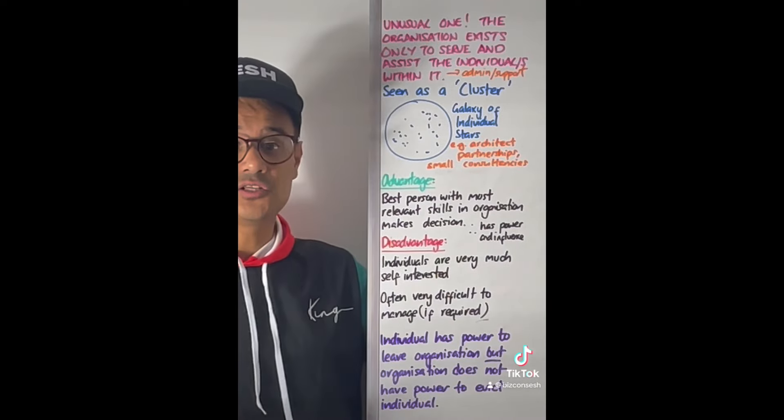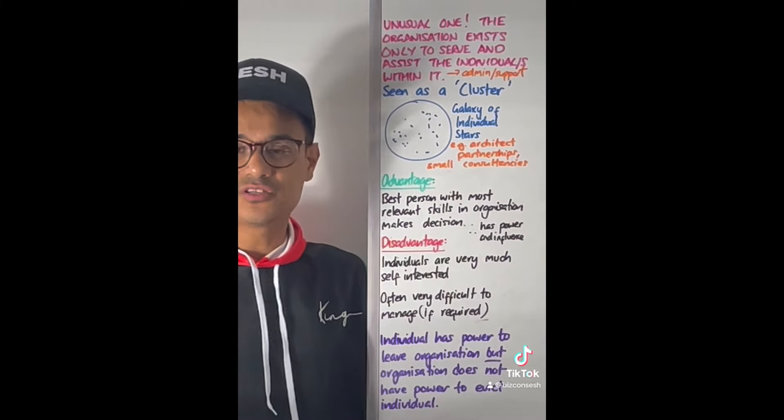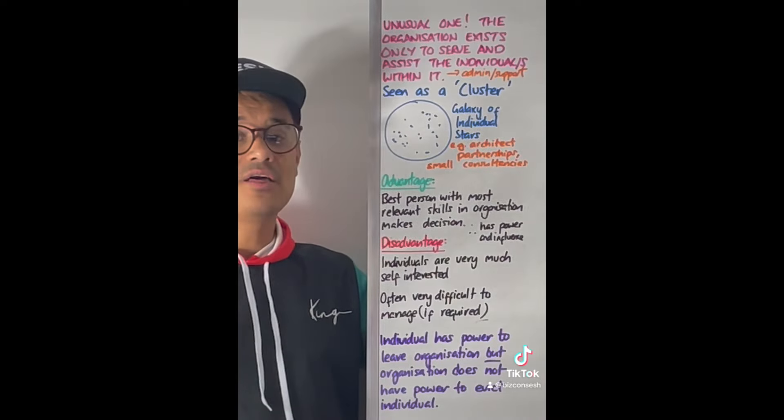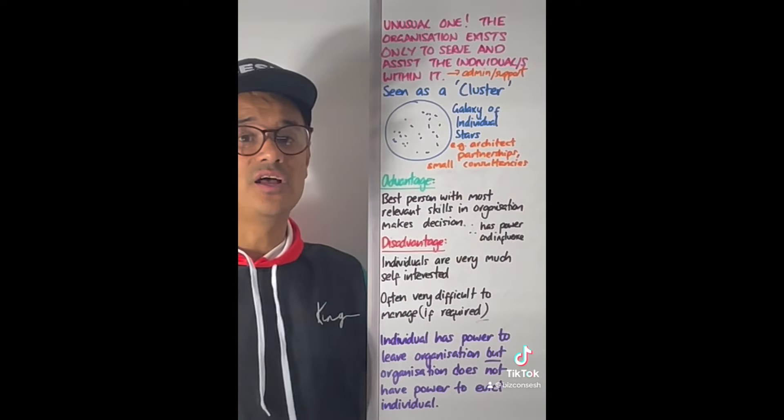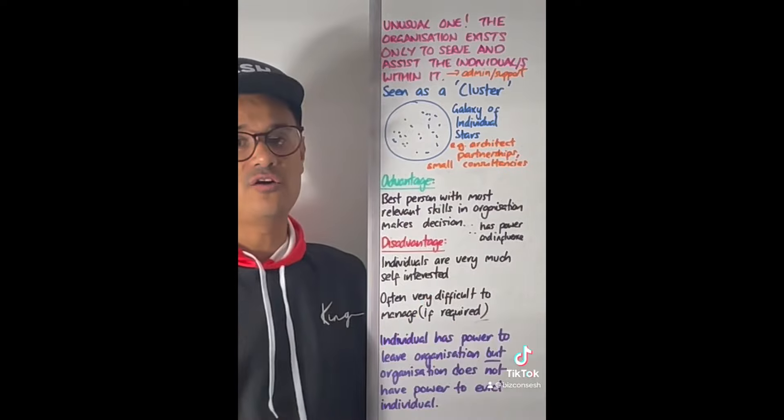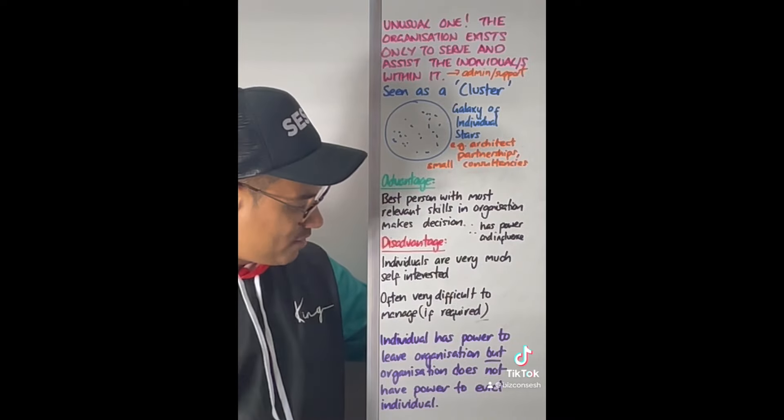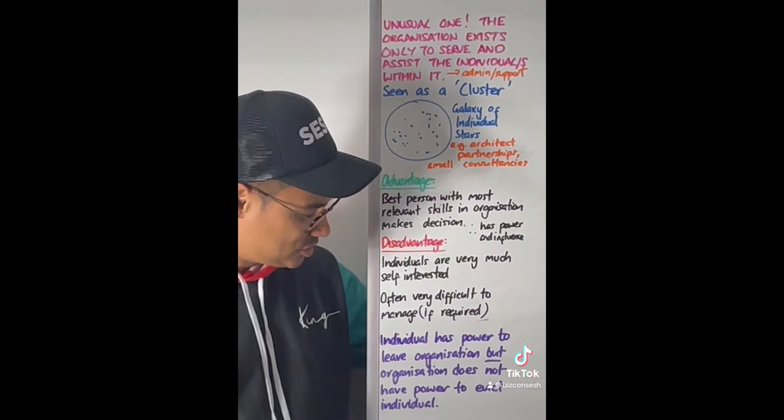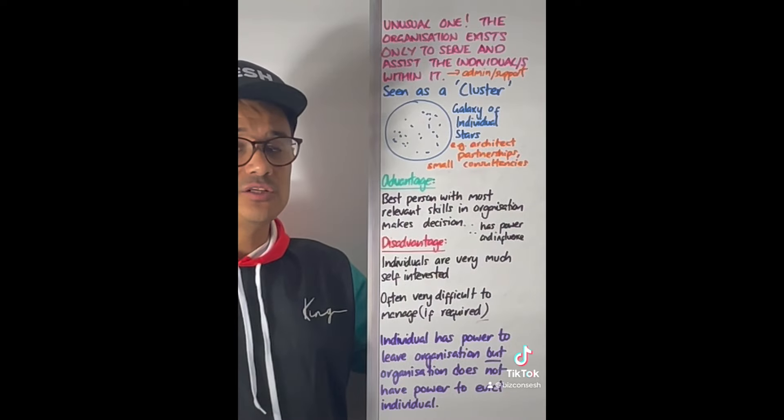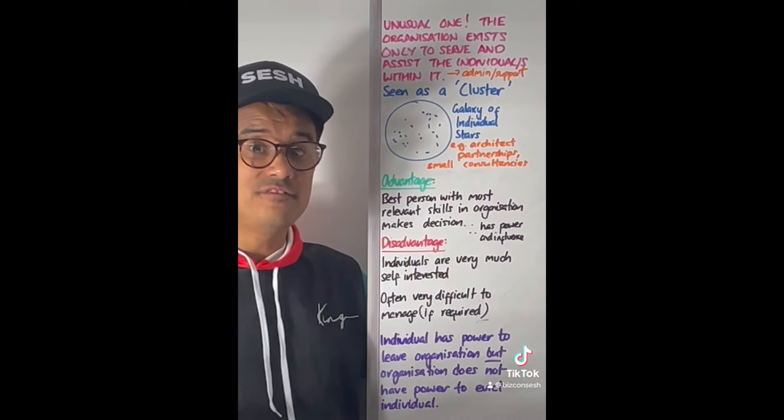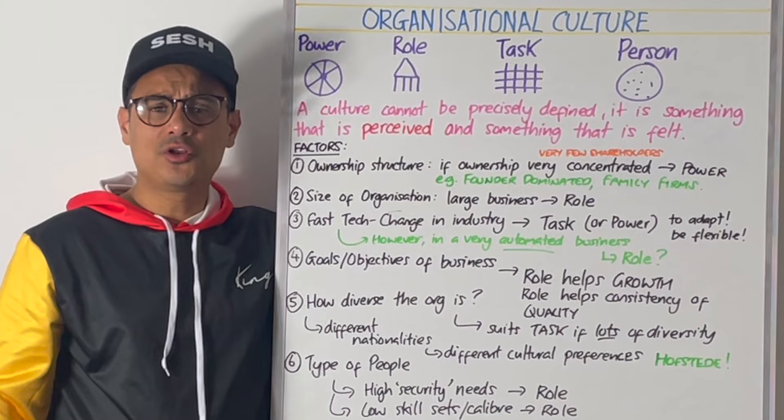The advantage of having a person culture, and remember it's very rare, is that the most relevant skills, the person with the most relevant skills, will be making the decisions. They will have the power and influence. The disadvantage is that these individuals are very self-interested, they're there for themselves to further their career and finances. They're very difficult to manage if that's required. The individual has the power to leave the organisation, but the organisation doesn't have the power to evict the individual because they're such a superstar.